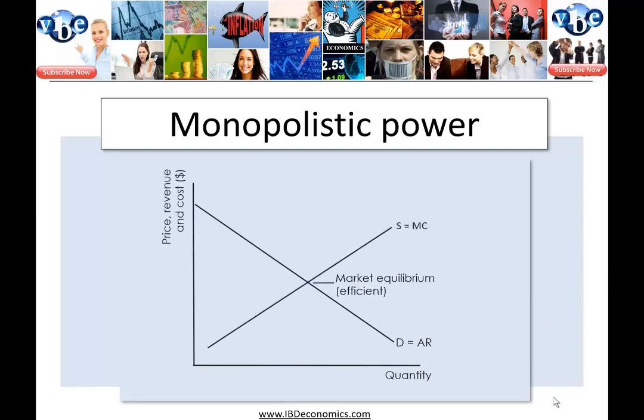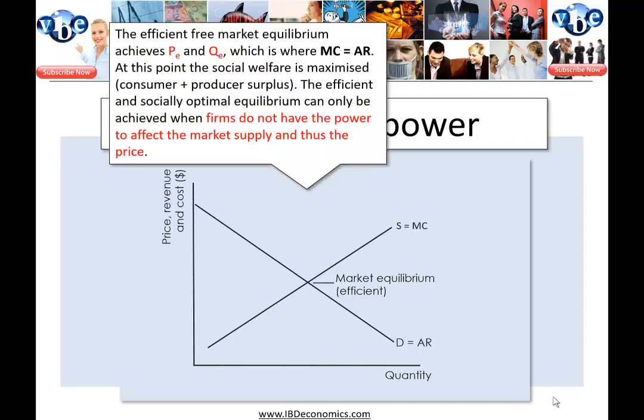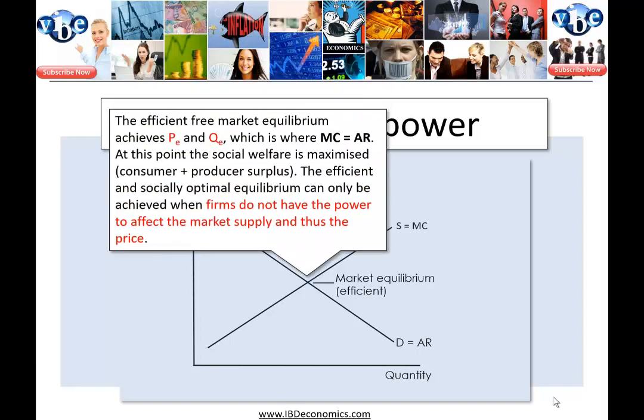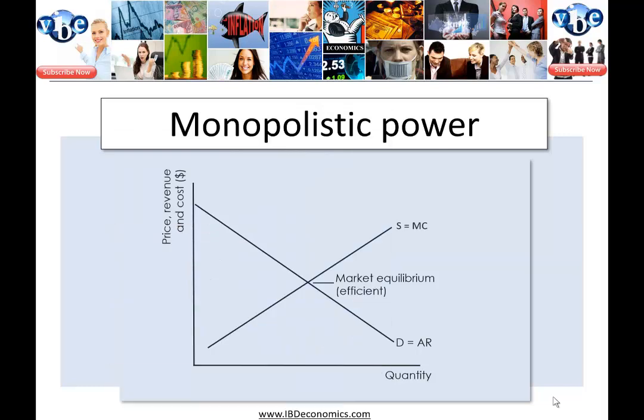Demand equals average revenue — average revenue being the price the good is sold for. In the efficient free market equilibrium, supply equals marginal cost. The efficient equilibrium achieves price equilibrium and quantity equilibrium where MC equals AR, and social welfare — consumer surplus plus producer surplus — is maximised. This efficient and socially optimal equilibrium can only be achieved when firms don't have the power to affect market supply and therefore price.